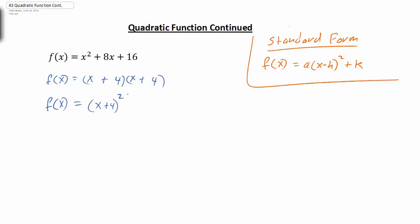From this we can easily identify the vertex: it's going to be (-4, 0), because there's nothing added on — that's understood to be plus 0. Our 'a' value is understood to be 1, so we know the parabola is going to open up, and we can continue from there to find the other pieces.